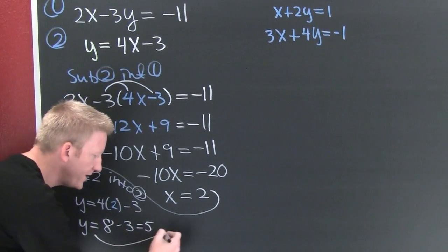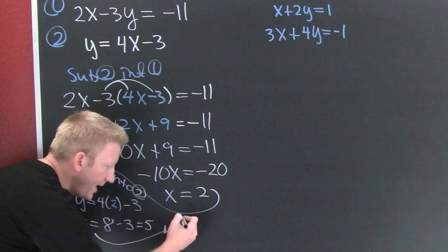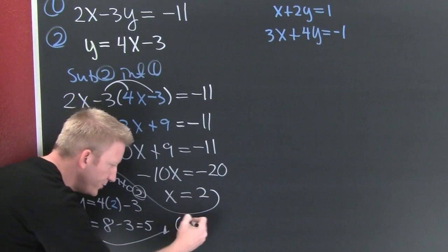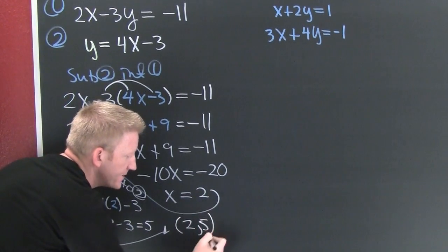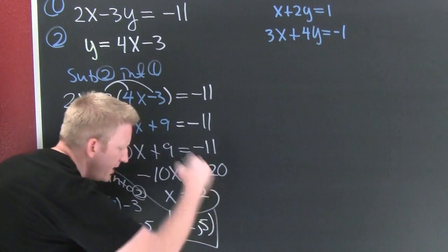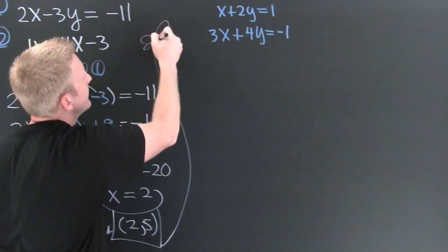So then what's my point? My point is the solution to a system is a point and this point's gonna happen to be (2, 5). Very nice. But if you don't believe me, check it.